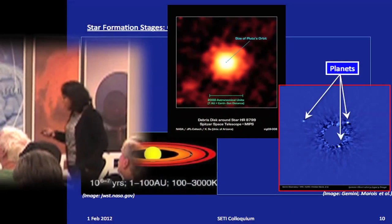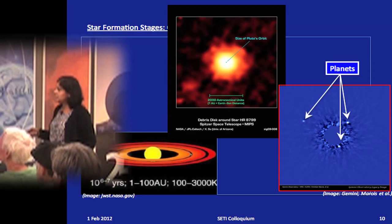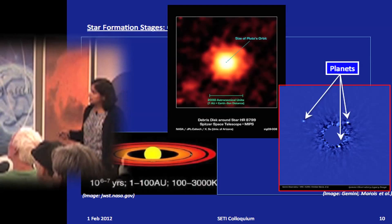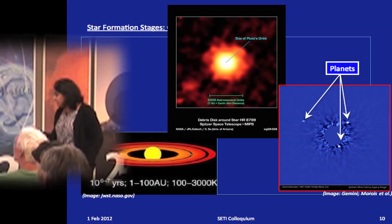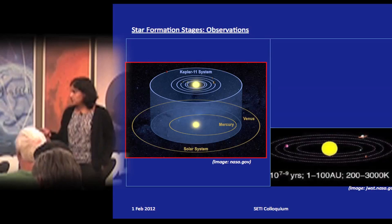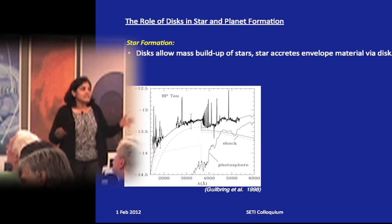This is a debris disc around HR 8799, about a thousand AU disc, with Pluto's orbit shown for scale. The disc was recently imaged and three planets were found within about 15 AU of the star — one of the few cases of directly imaged planets. We also know planetary systems are common from Kepler data, such as the Kepler-11 system, demonstrating that discs play an enormous role in both star and planet formation.